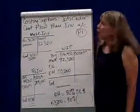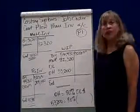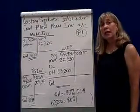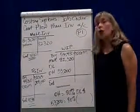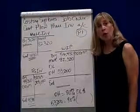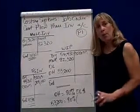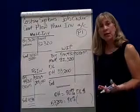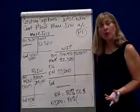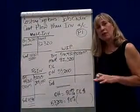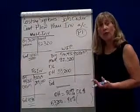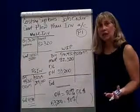In managerial accounting, we're looking at costing systems — specifically job order costing. We're going to talk about how costs flow through a job order cost system. Remember that the source document we use is called a job order cost card. The best way to show how costs flow through is to take an actual problem.